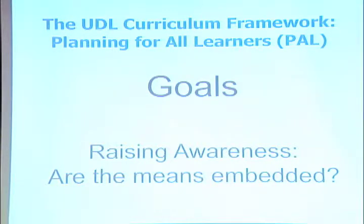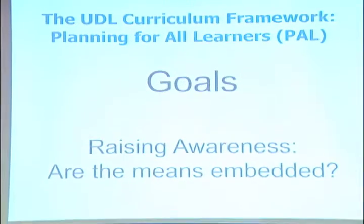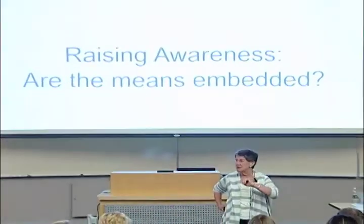The goal is the starting place and it's really quite important — you have to clarify your goal. Be aware if the means is embedded in the goal. If the how is embedded in the goal, it doesn't mean it's a bad goal; it just means you have to be aware of it. Because if you embed the means in the goal, you're providing only one way to get there. If it's a skill goal in which you want the means embedded, you have to recognize that some students won't be able to achieve it, and you must embed supports or scaffolds.